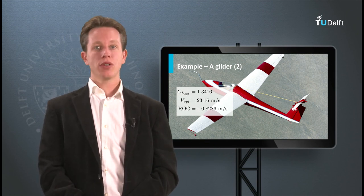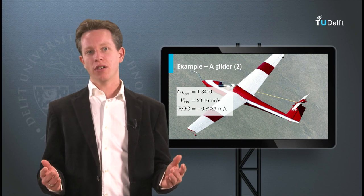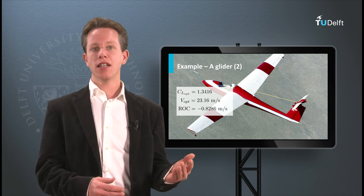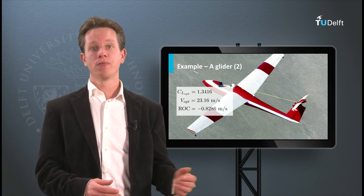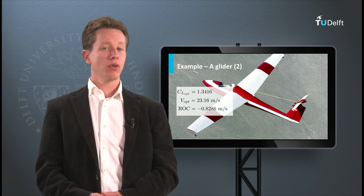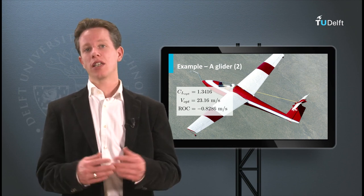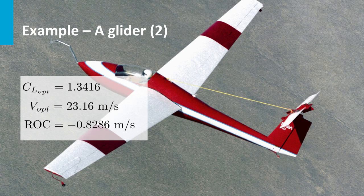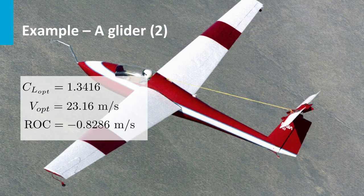Now a heavy aircraft will go down much faster than a light aircraft. In addition, the air density also plays a role. A small air density, for example, results in a larger airspeed for a given descent angle. Simply because the aircraft has to fly faster in thin air to create sufficient lift.